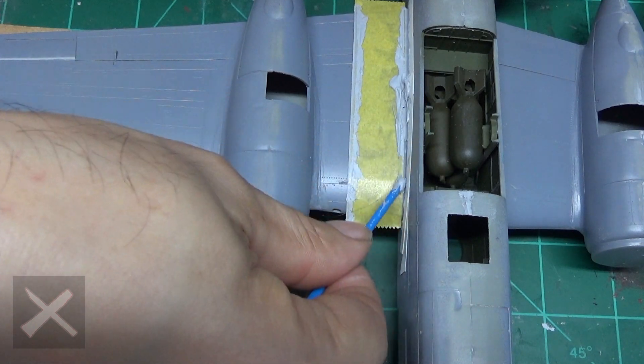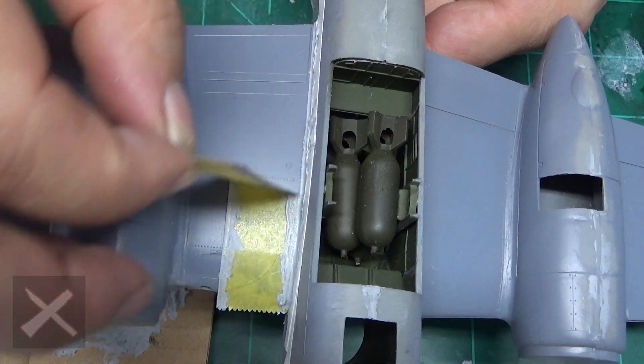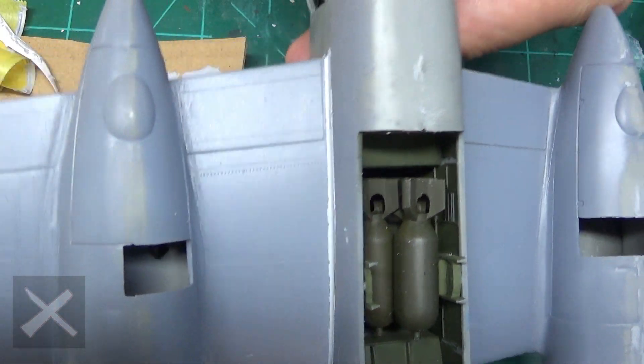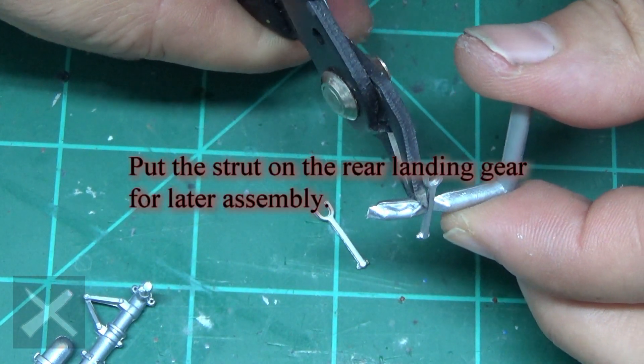You just kind of fill it in, smooth it out. You don't want a lot of filler on there, just enough to fill in the gap. So that's what it looks like with the tape on it. It's nice and clean.